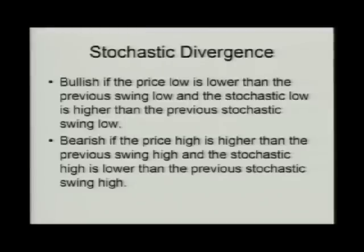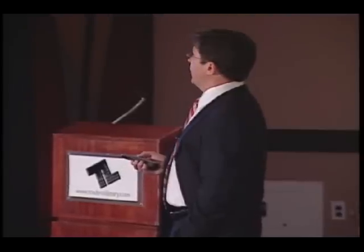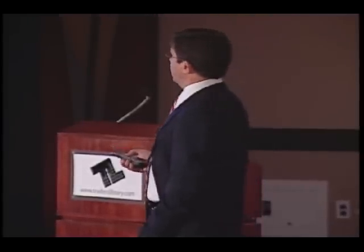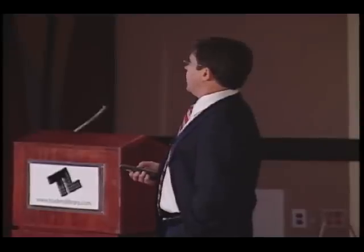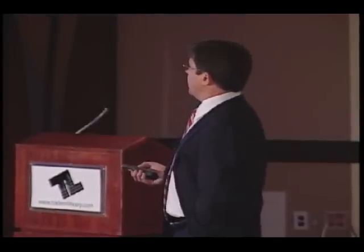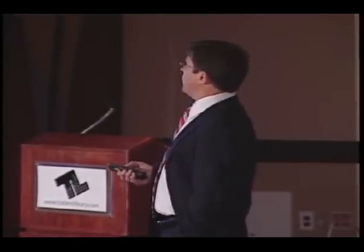Although I am glued to the screen all day, it means I don't have to be. Now, stochastic divergence. Bullish divergence occurs if the price low is lower than the previous swing low and the stochastic low is higher than the previous stochastic swing low. Bearish if the price high is higher than the previous swing high and the stochastic high is lower than the previous stochastic swing high.